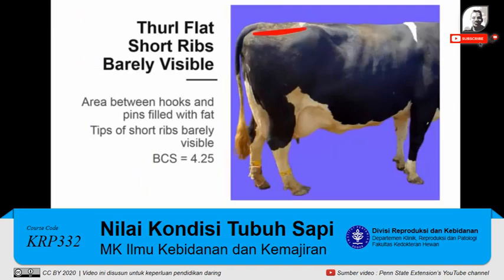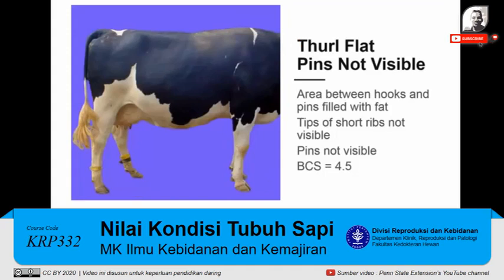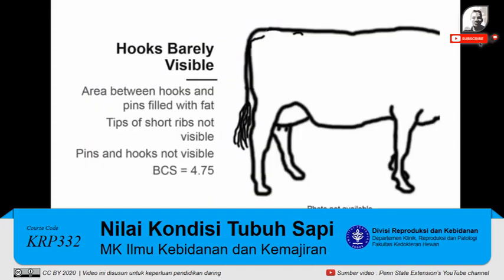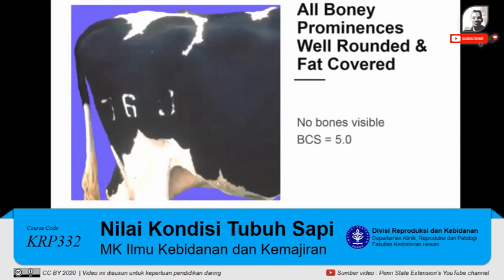If the tips of individual bones in the short ribs are just barely visible, the body condition score is 4.25. As fat continues to accumulate, the tips of the short ribs can no longer be seen as individual bones, and the pins are no longer visible — such a cow scores 4.5. When the bones of the hooks become barely visible, the body condition score is 4.75. The highest score of 5.0 is assigned to cows with a generous covering of fat on all the bones discussed — these cows are well-rounded.